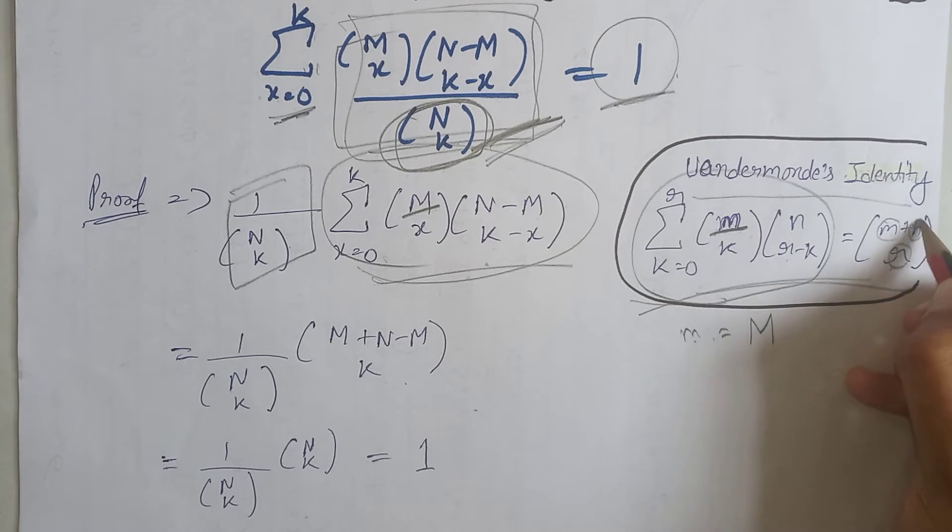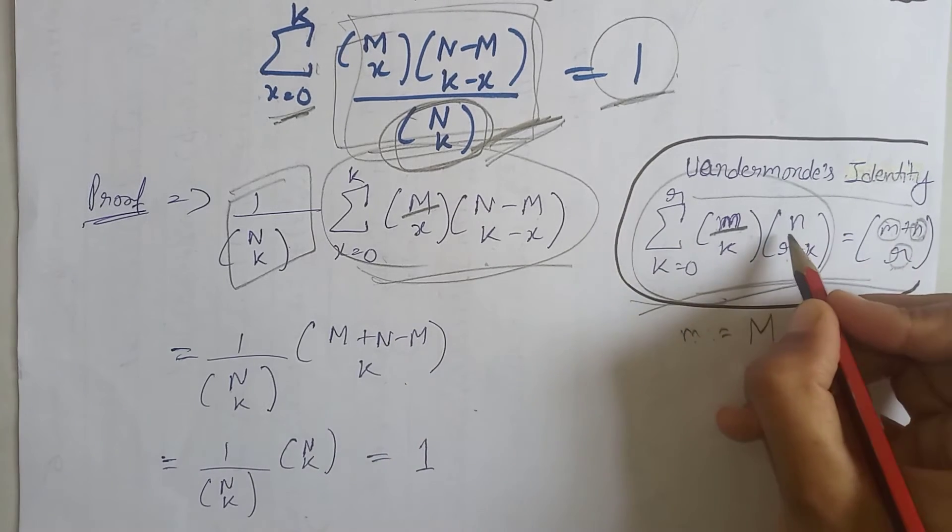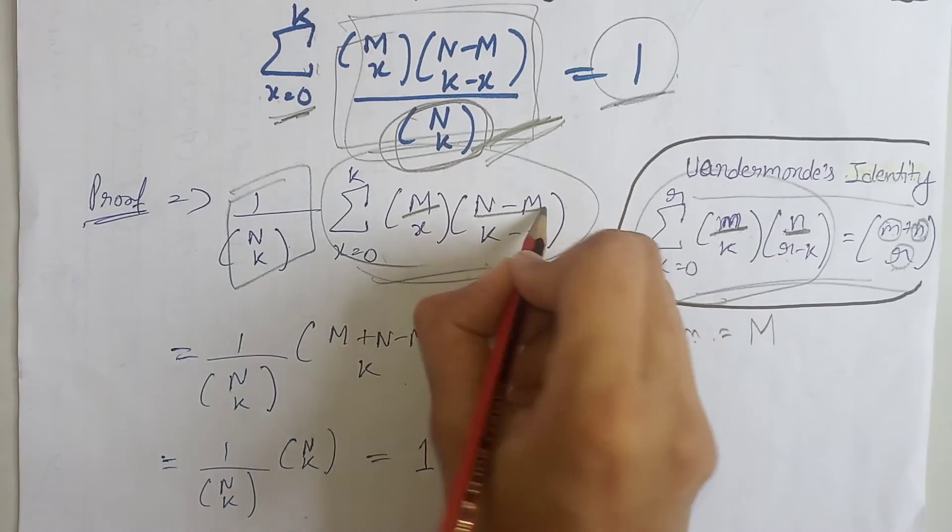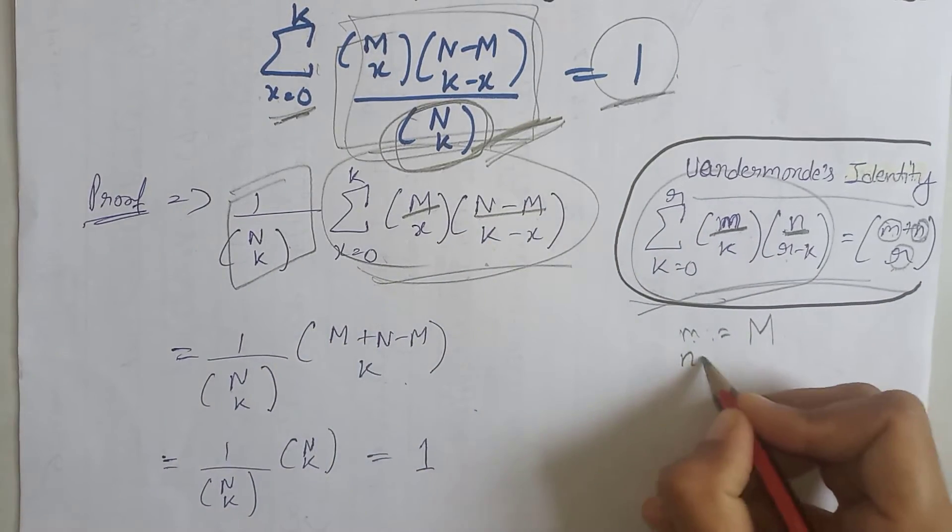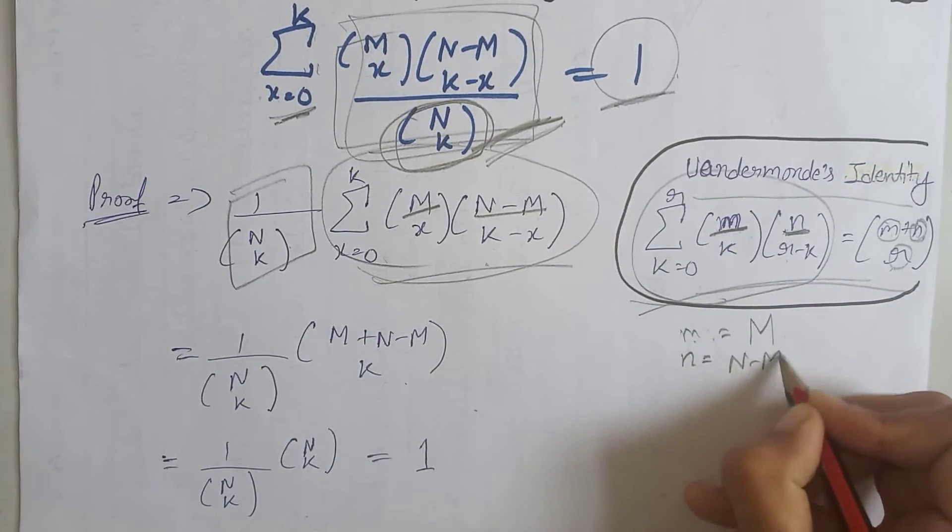Now we will find the value of small n. You can see that at the place of small n here we have capital N minus M, that means small n is equal to capital N minus M.